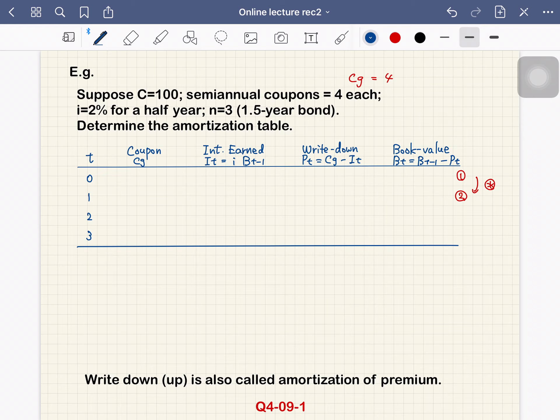First, we can determine the coupon. Coupon is $4 each, so 4, 4, 4. Second, we can determine the book value at time 0. That is by the price formula.